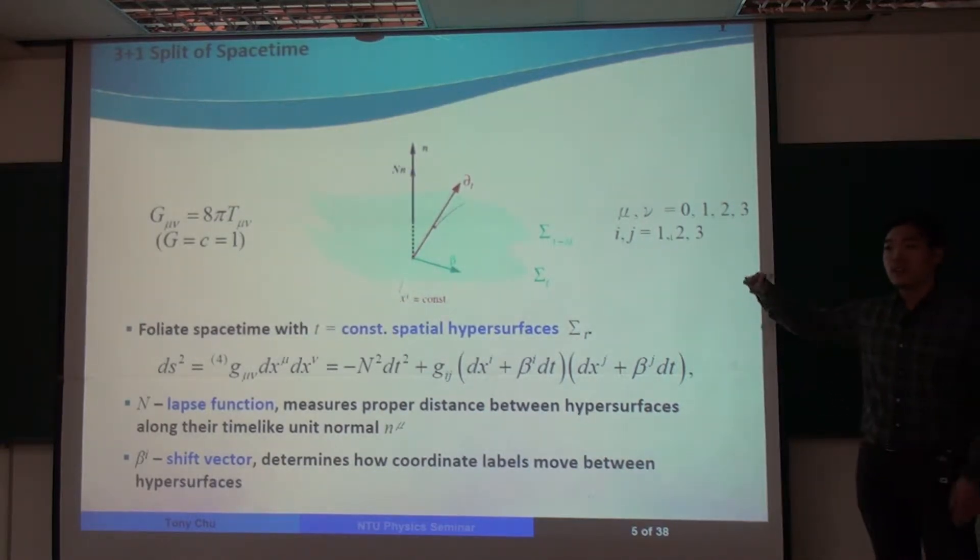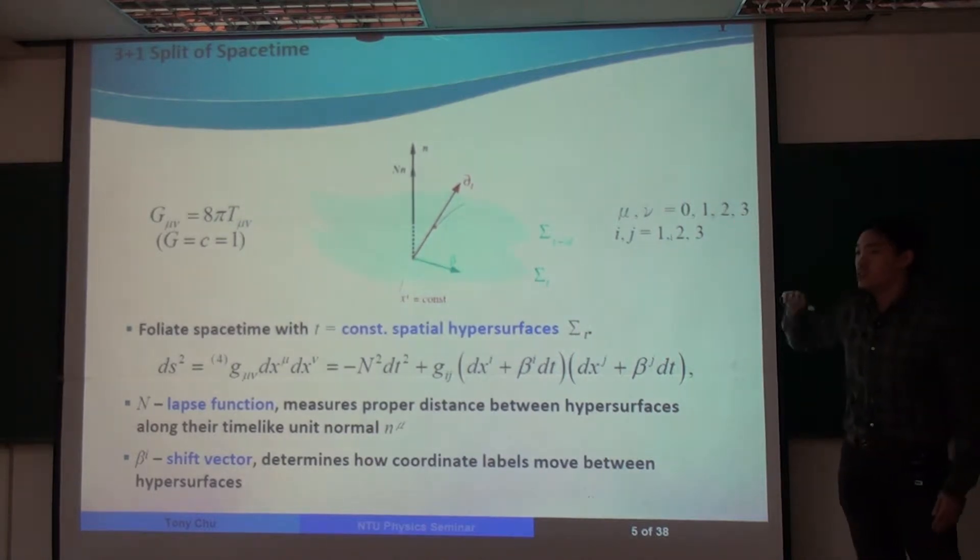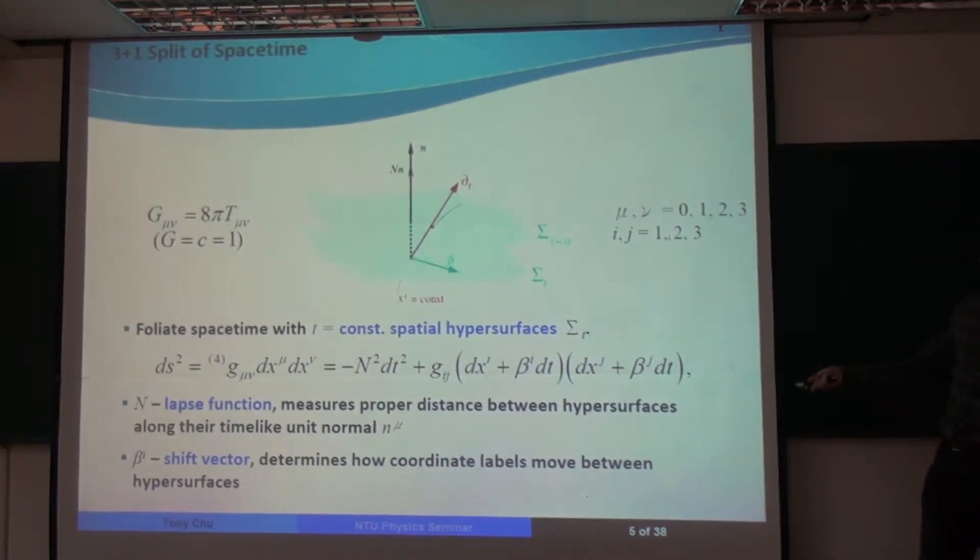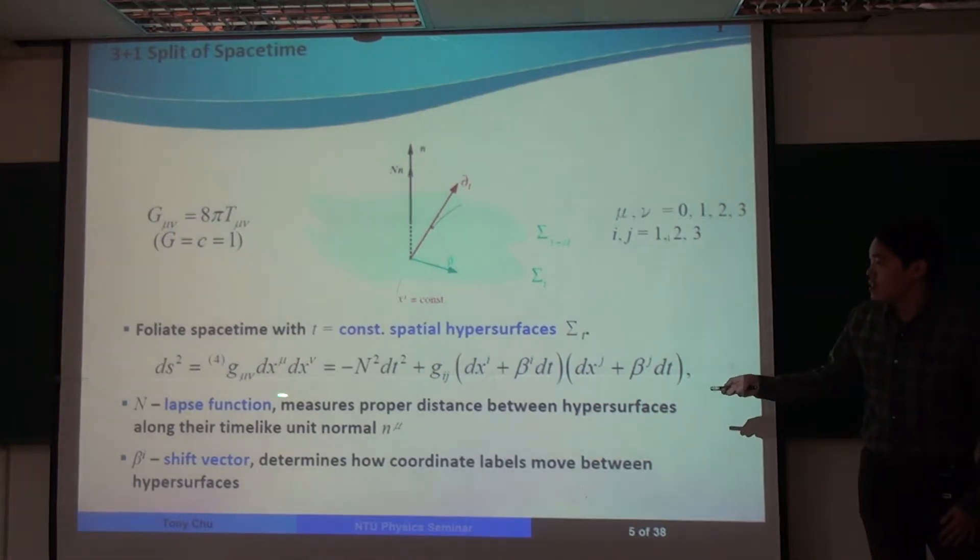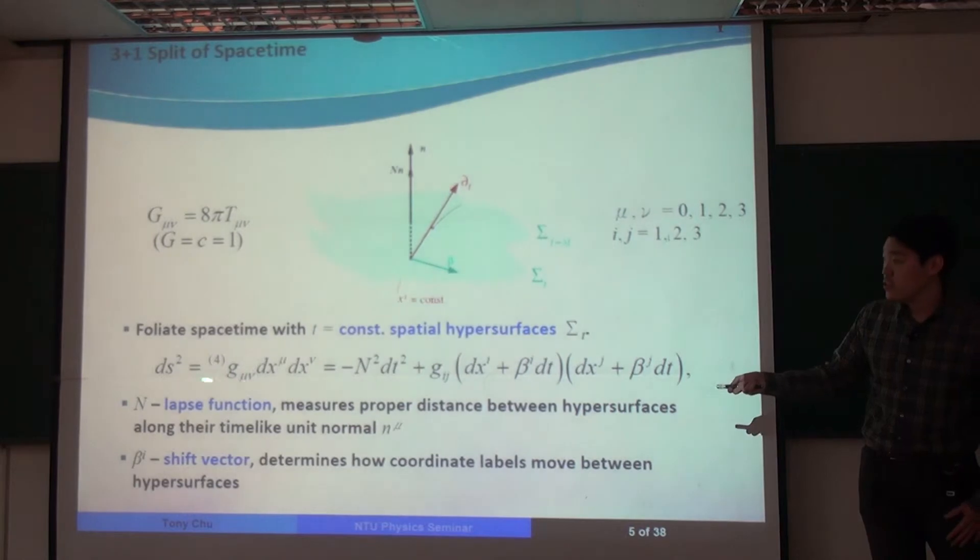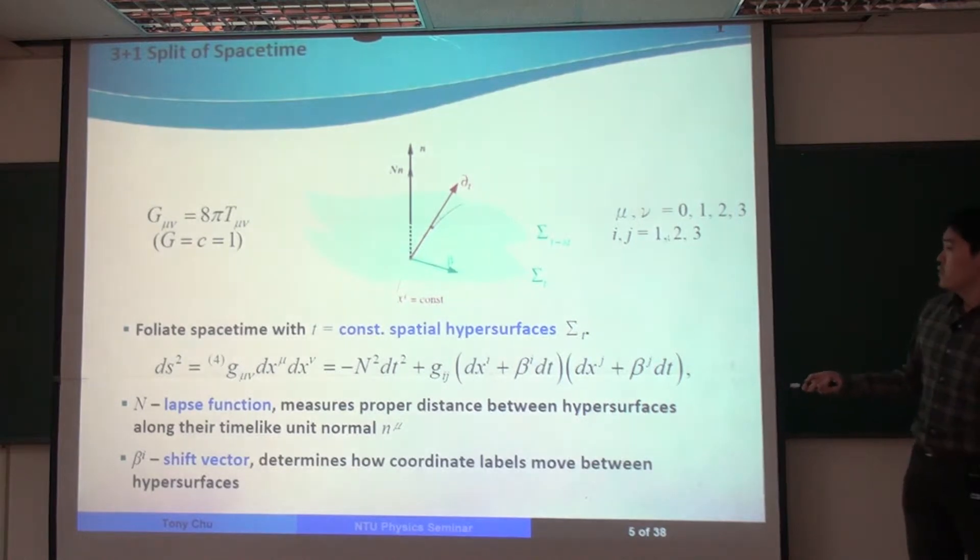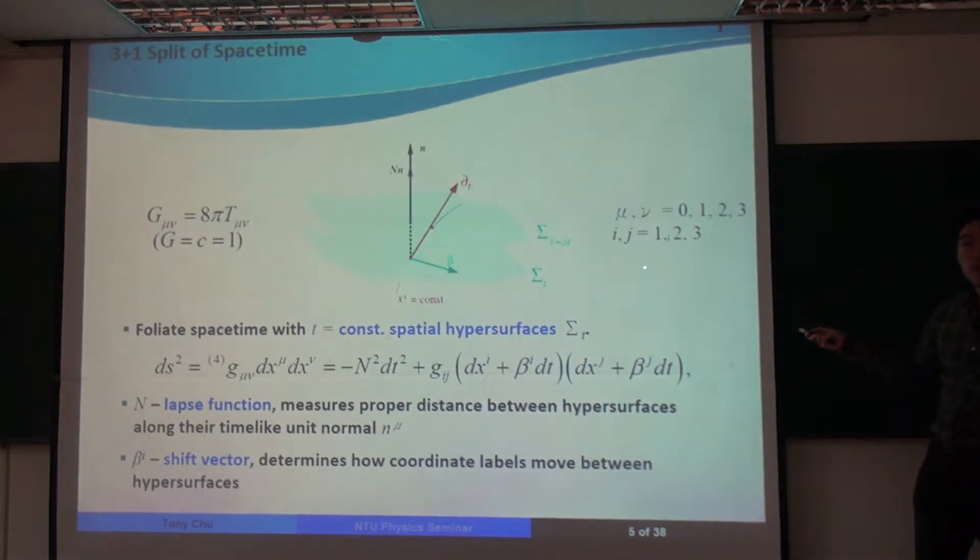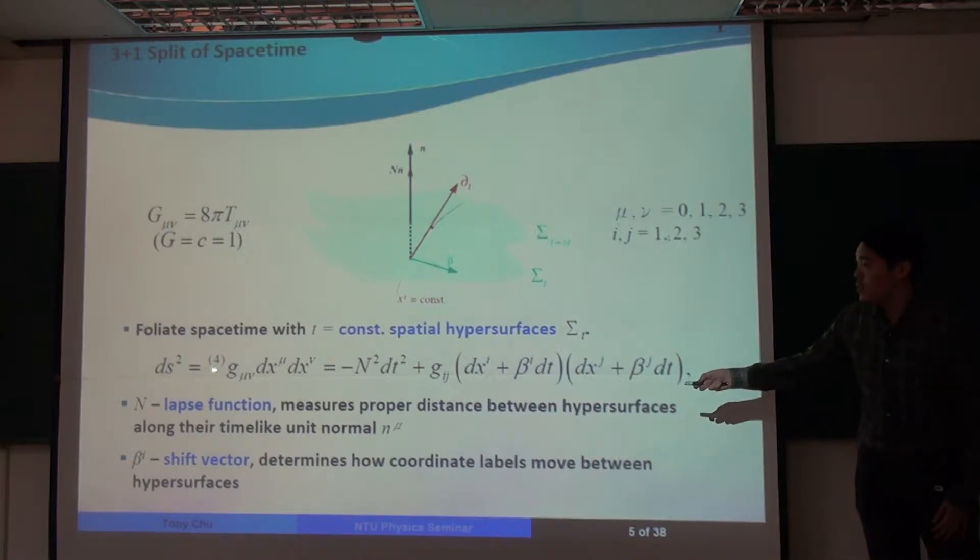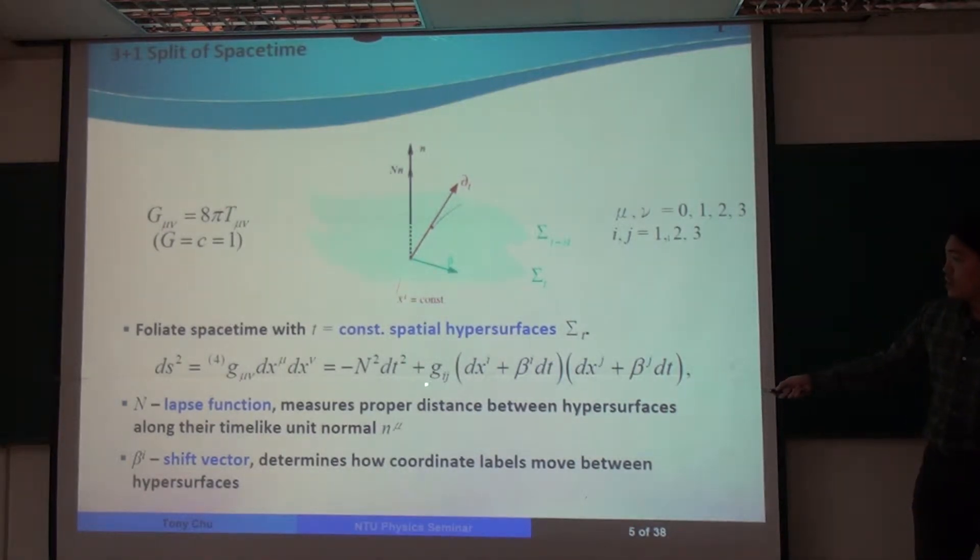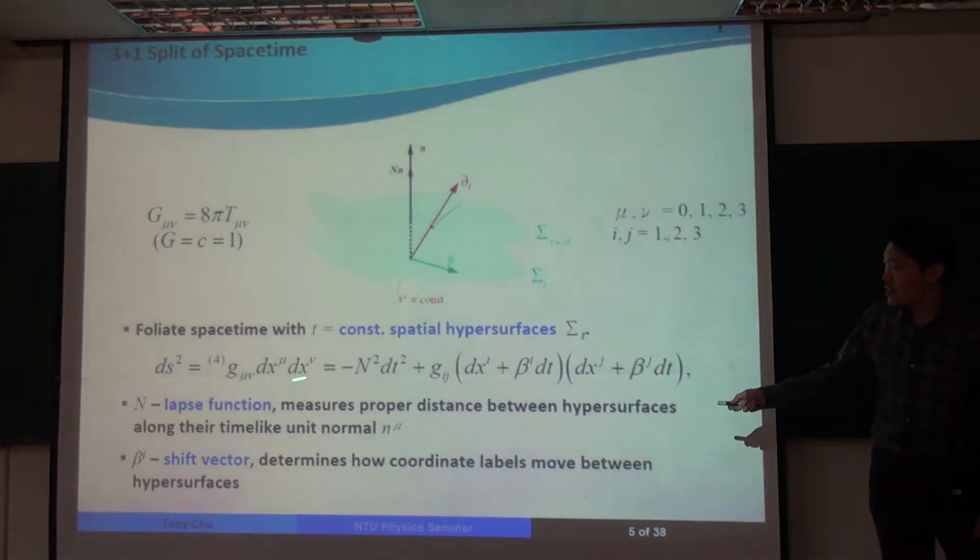A succession of sigma t's of spatial hypersurfaces make up our spacetime. And mathematically, this is expressed as a decomposition of a spacetime metric, g mu nu. Here, repeated indices are contracted. I'm using the Einstein summation convention. Mu nu are spacetime indices that go from 0 to 3. And ij are spatial indices, going from 1 to 3. And we write the spacetime metric in terms of a spatial metric, gij. So this is the metric just on one of these sigma t hypersurfaces.